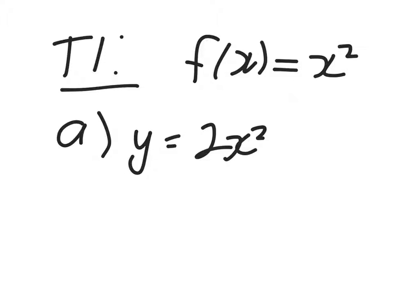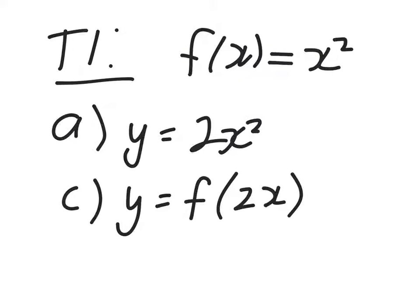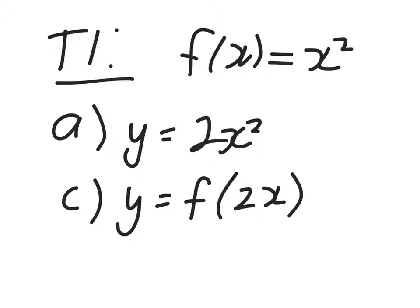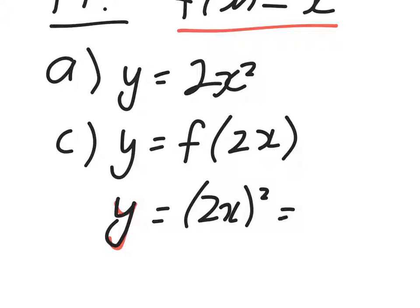y equals 2f of x plus 4 — that's straightforward. Let's look at c: y equals f of 2x. So what does that mean? Our input now into f is 2x. So wherever you see an x in the function rule, you're going to pull out that x and replace it with 2x in parentheses. So for c, we're going to get y equals 2x squared, which gives you 4x squared in total.